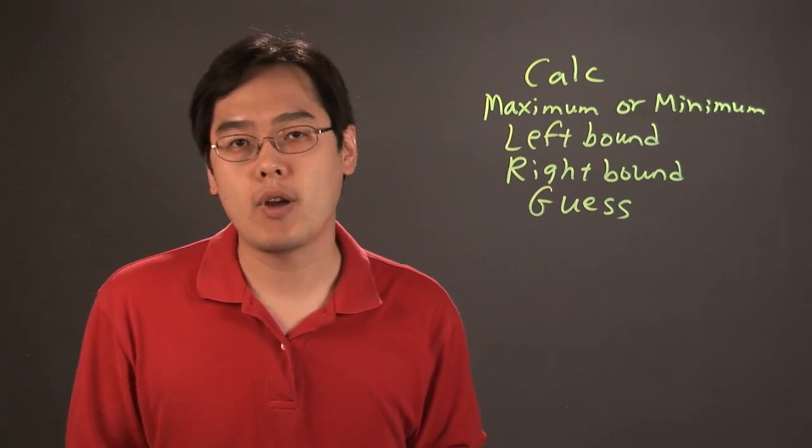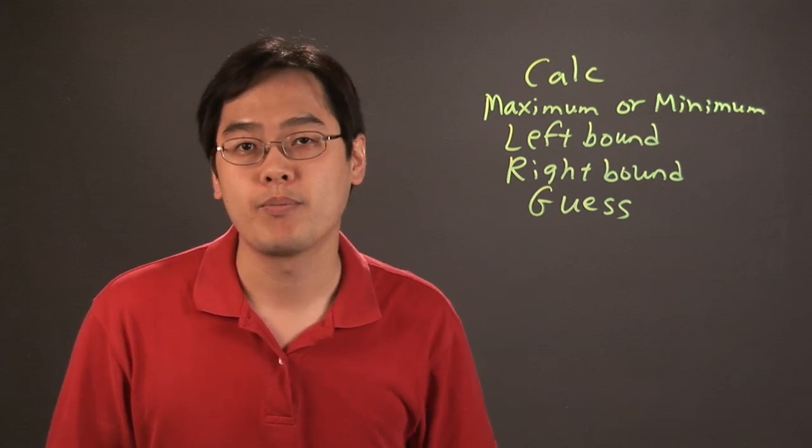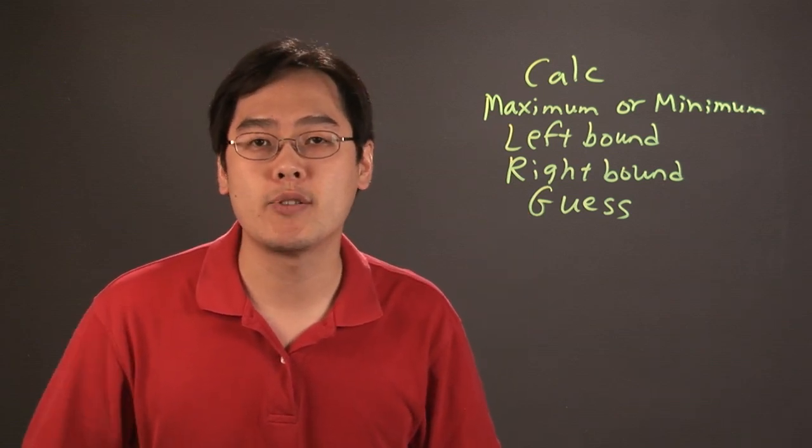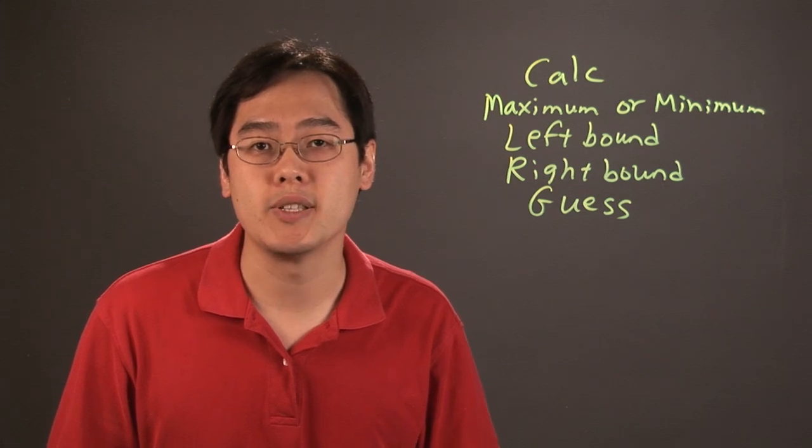So basically, in a graphing calculator to find the absolute max or min, you want to just follow these steps and you should be good to go. So I'm Jimmy Chang, and that's how to use a graph to find the absolute maximum or minimum and estimate to two decimal places.